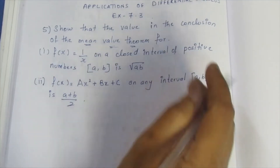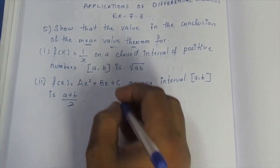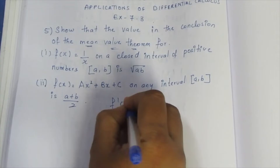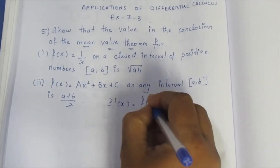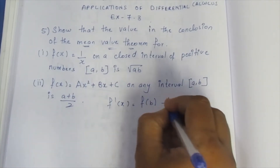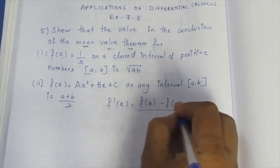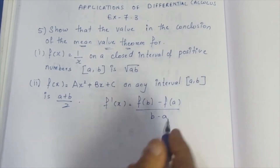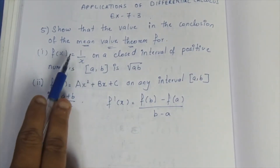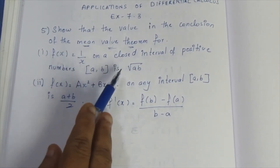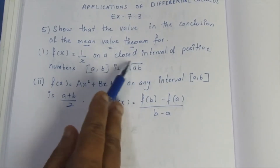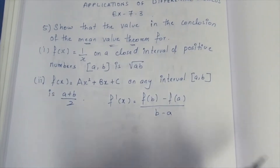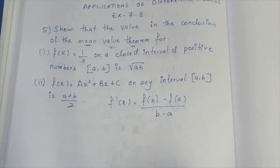The Mean Value Theorem states that f'(c) is equal to [f(b) - f(a)] / (b - a), where [a, b] is the closed interval. We need to show that the value c is equal to √(ab), so x = √(ab).